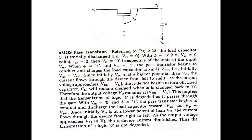With V-in equal to 0 and phi equal to 1, the NMOS transistor begins to conduct and discharges the load capacitor towards VSS — that is, VGS equals VDD. Since V-in is at a lower potential than V-out, the current flows through the device from right to left. As the output voltage approaches VSS, the N device current diminishes. Thus, the transmission of logic 0 is not degraded. In summary for the N-pass transistor: transmission of logic 0 is not degraded, but transmission of logic 1 is degraded.